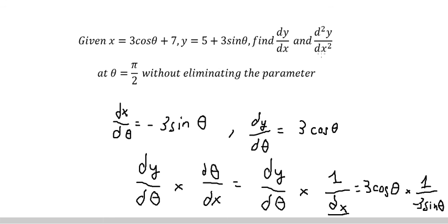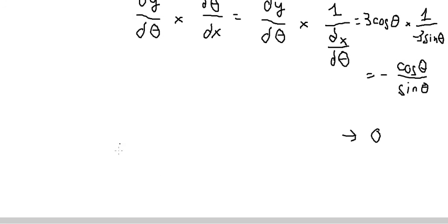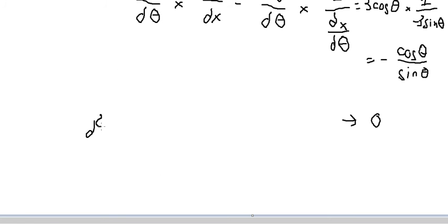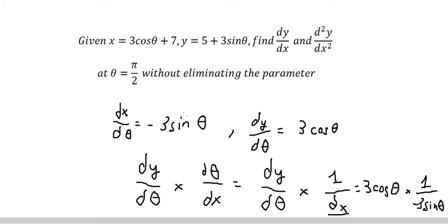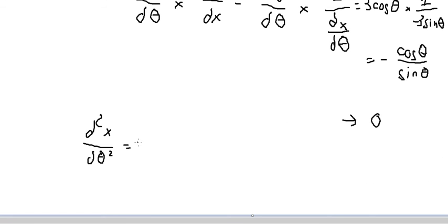Now let's go to second derivative of the function. So we need to find second derivative of function. We have d theta, so we will use this one in here, and the derivative of x, you will get about negative 3 cos theta.